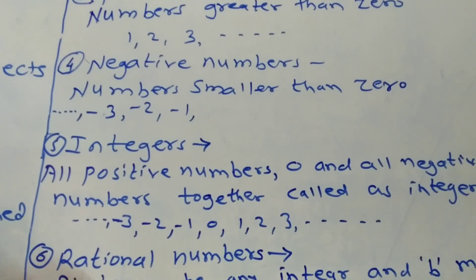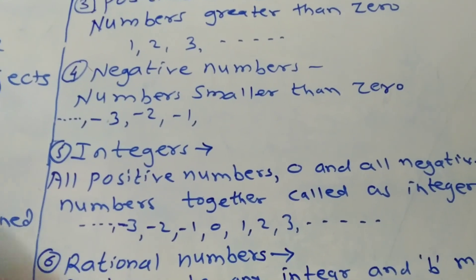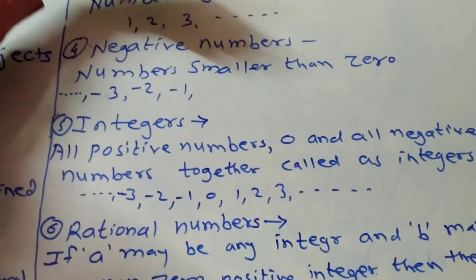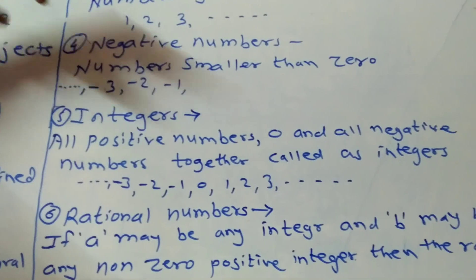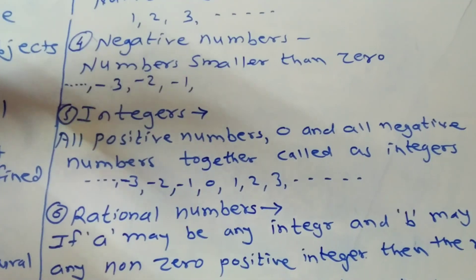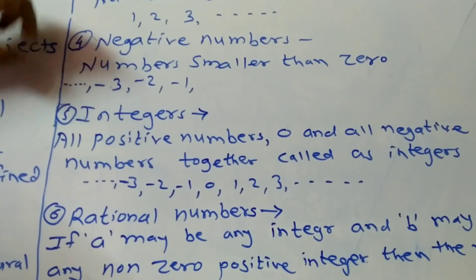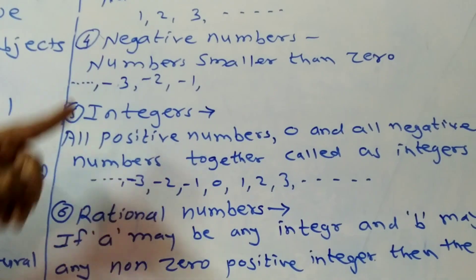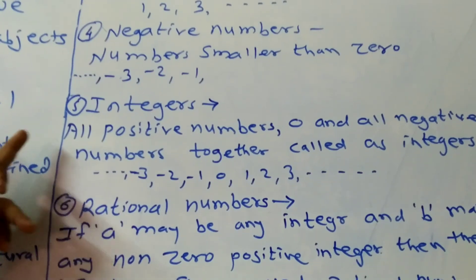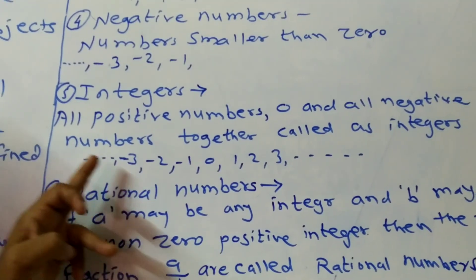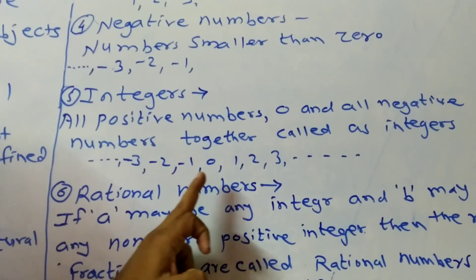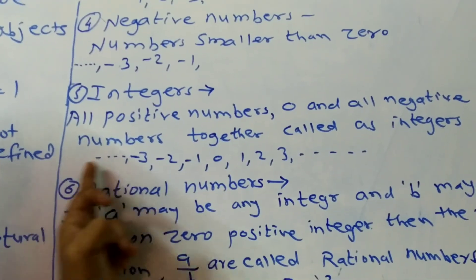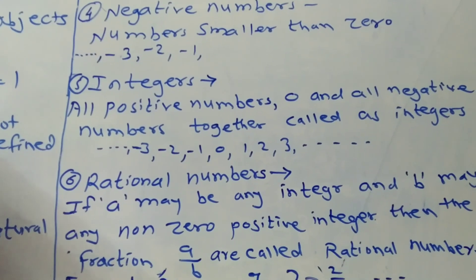The fifth type is integer numbers. All the positive numbers, 0, and all the negative numbers together are called integer numbers. That is: ..., minus 3, minus 2, minus 1, 0, 1, 2, 3, ... This set of numbers is called integer numbers. Therefore, the smallest integer number cannot be defined, as well as the largest integer number cannot be defined.